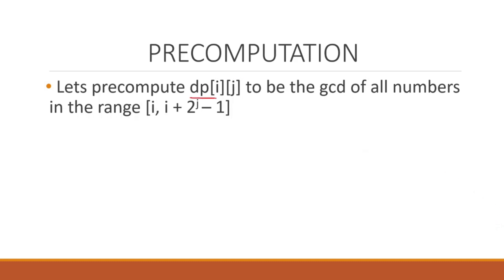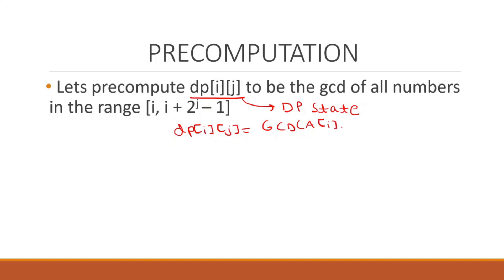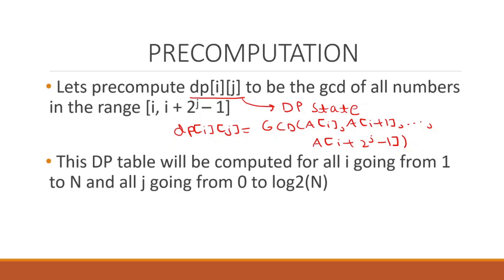The first step is the precomputation. We use the DP state dp[i][j] to be the GCD of all numbers in the range [i, i + 2^j - 1]. This means dp[i][j] is the GCD of a[i], a[i+1], all the way up to a[i + 2^j - 1]. This DP table is precomputed for all i from 1 to n and all j from 0 to log n. This is where the name sparse table comes in — because our table is of size n log n.